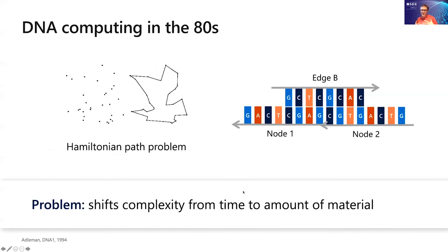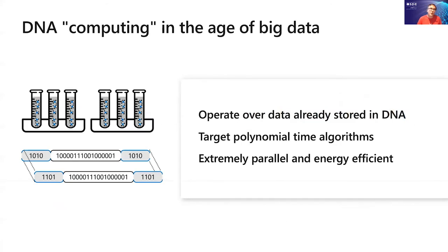And it was an incredible idea that opened up a lot of possibilities in thinking about molecular computing. But the problem in this specific solution is that it shifts a complexity from time to amount of material. So this is an exponential time problem. Now if we were to do this in space, you're going to need an exponential amount of space. So for you to solve any reasonable size problem here, you're going to need a lot of DNA, potentially even all of the atoms of the universe in form of DNA, which is definitely not practical.